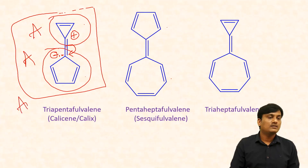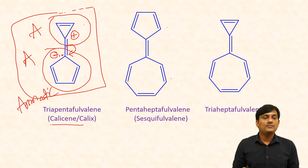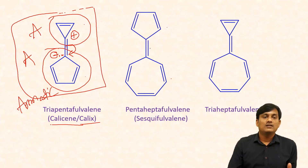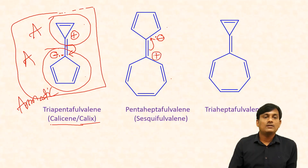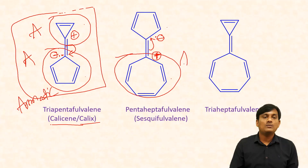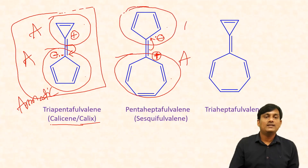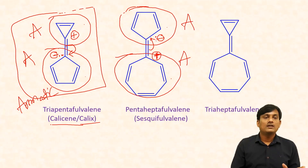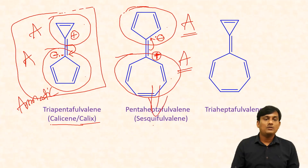This one is aromatic. Triafulvene with pentafulvene is also called calycene — this one is aromatic. If you take the five-membered and seven-membered ring combination, electrons shift to form a cyclopentadienyl anion and a tropylium cation. In this case also, tropylium cation is aromatic and cyclopentadienyl anion is aromatic, so the whole compound is aromatic. When movement of electrons gives both rings aromatic character, the compound will be aromatic — and pentaheptafulvolene is also aromatic.